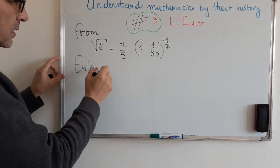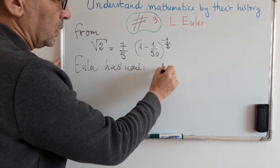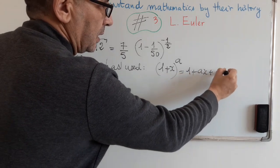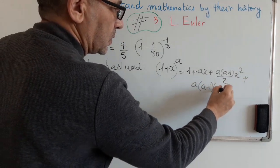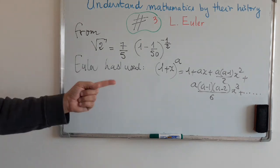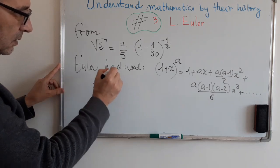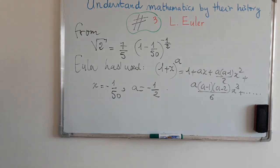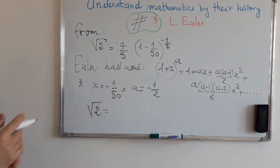Euler had used the following expression. 1 plus X to the power A is the same as 1 plus A times X plus A times A minus 1 over 2 times X squared plus A times A minus 1 times A minus 2 over 6 times X cubed, etc. Applying this expansion carefully with X equals 1 over 100 and A equals minus half. Applying this, we can find as Euler had done...